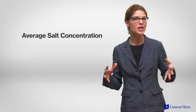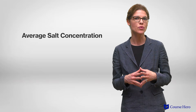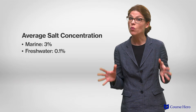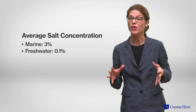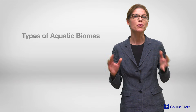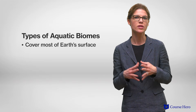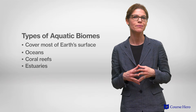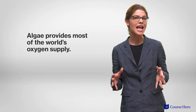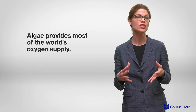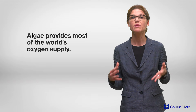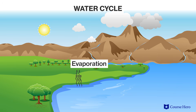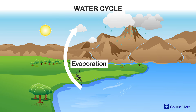For example, marine biomes have average salt concentrations of 3%, whereas it is less than 0.1% for freshwater biomes. Marine biomes cover most of the Earth's surface and include oceans, coral reefs, and estuaries. Marine algae provide most of the world's oxygen supply and take in large amounts of carbon dioxide. The evaporation of seawater provides rainwater for the land.